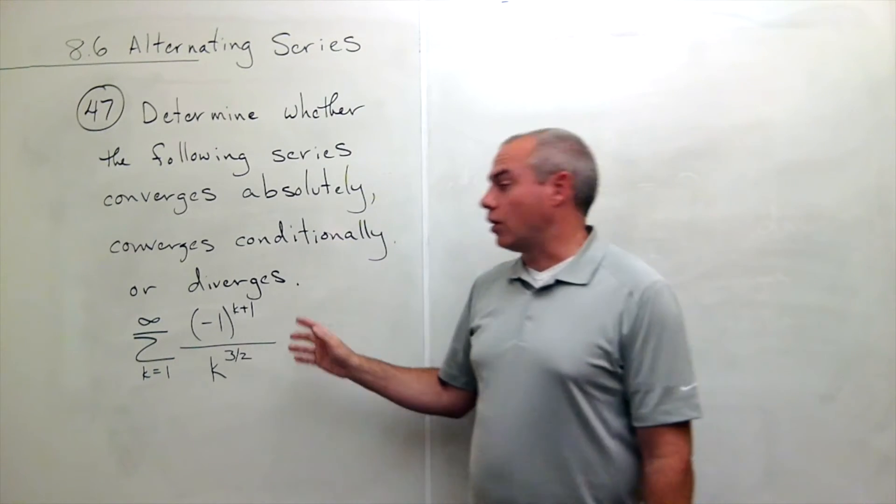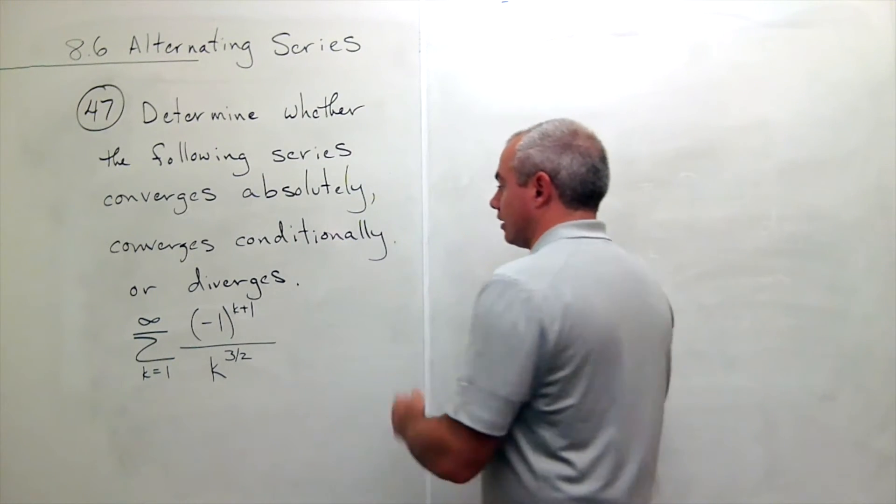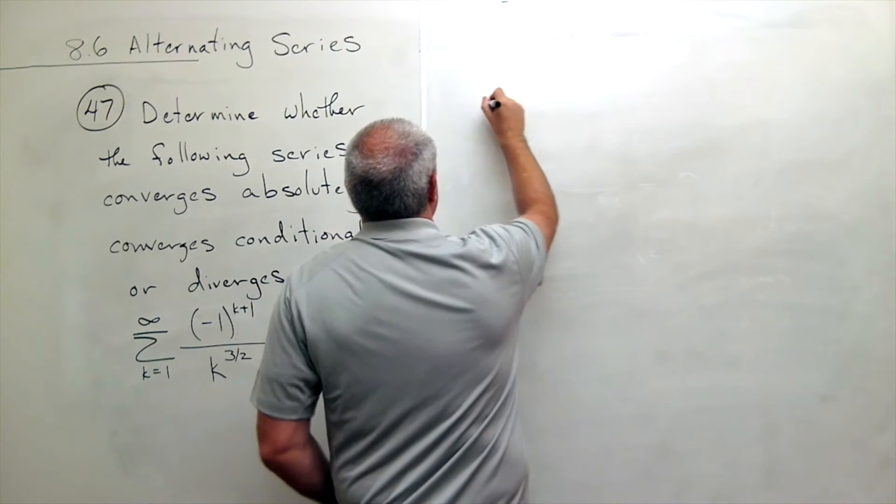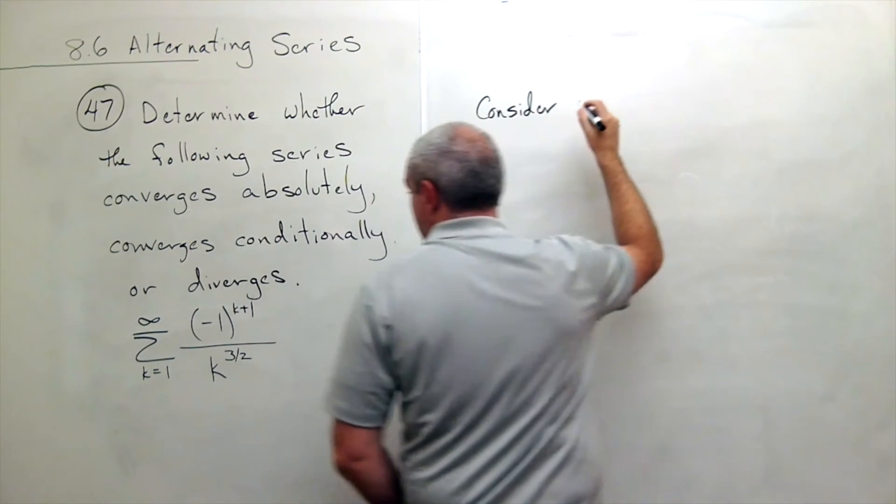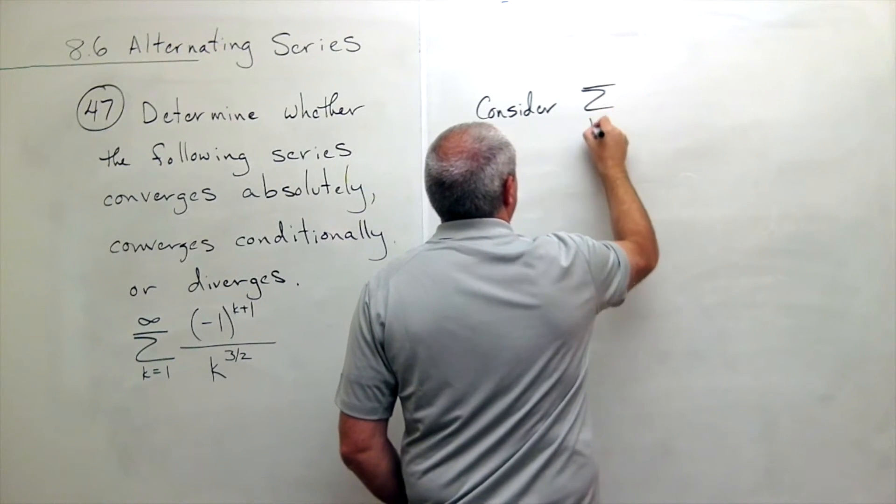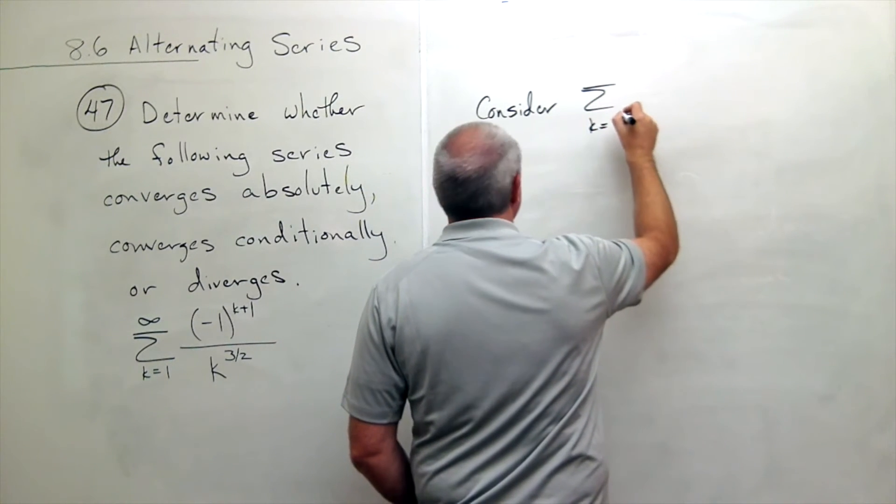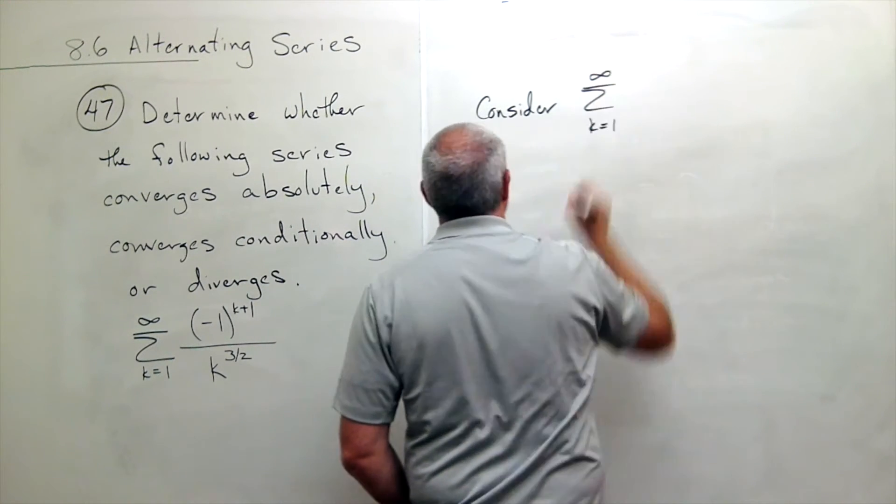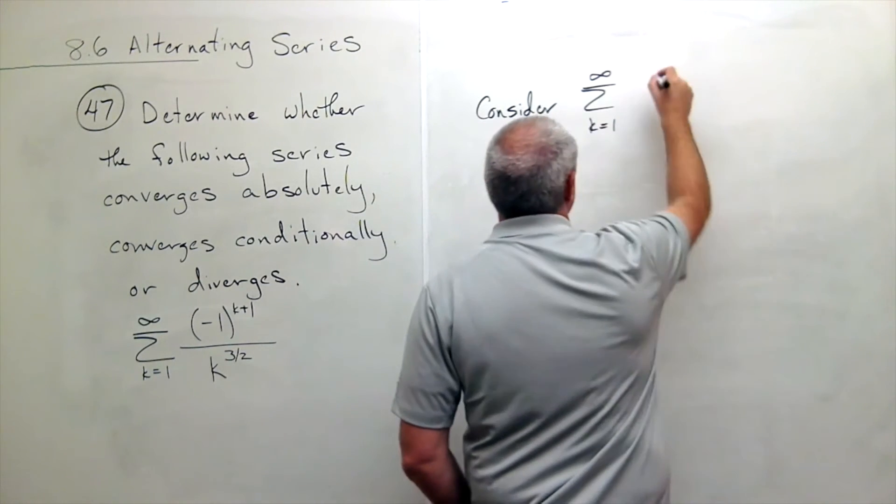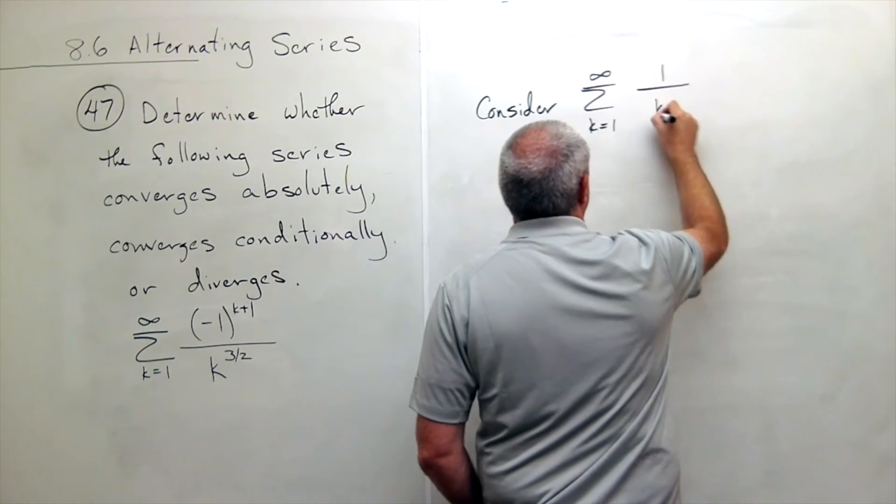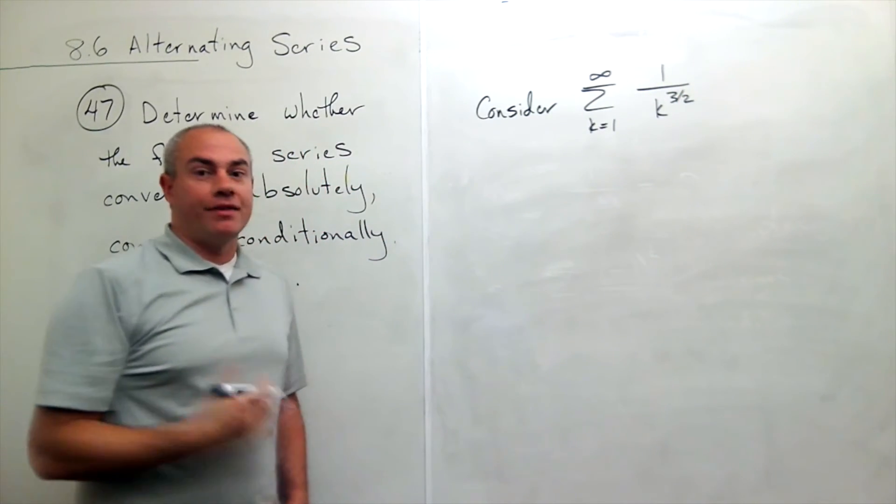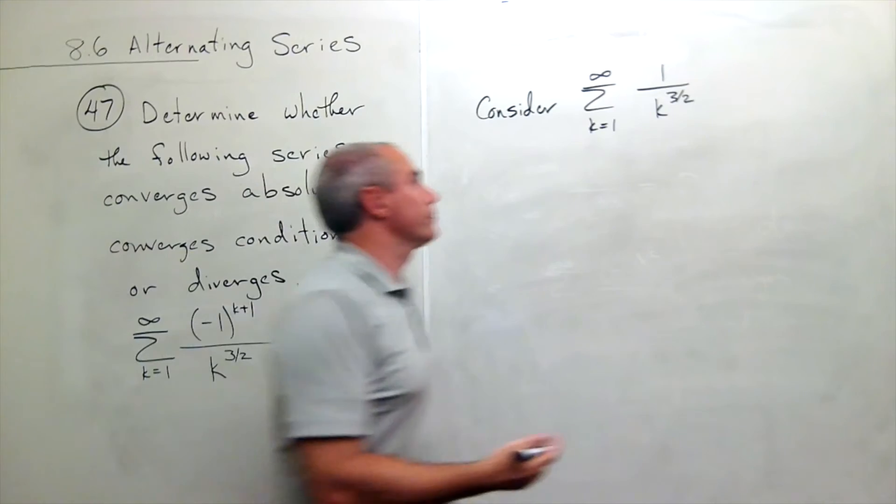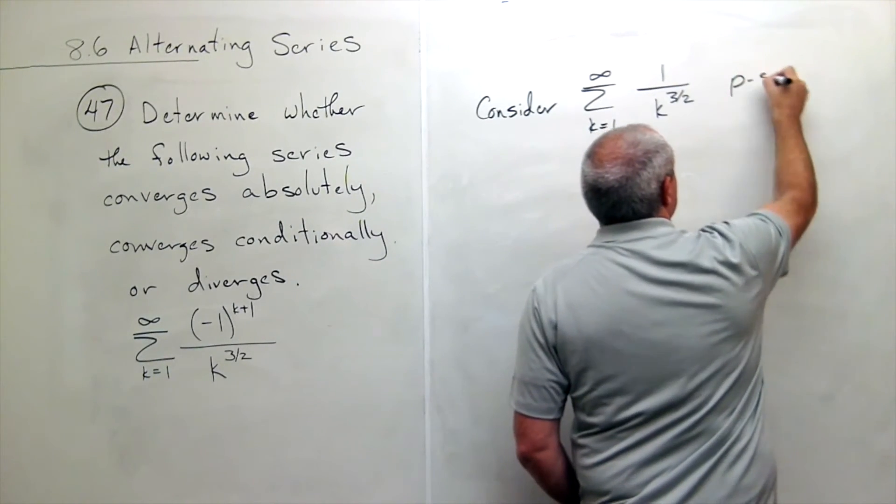Alright, so if I just look at this thing without the negatives, I consider the sum k going from one to infinity of one over k to the three over two. I see right off the bat that's a p-series.